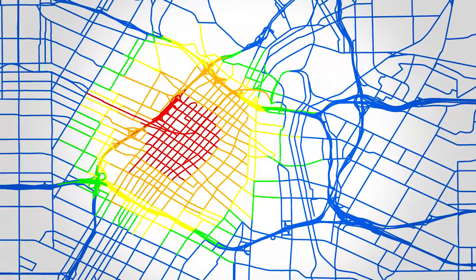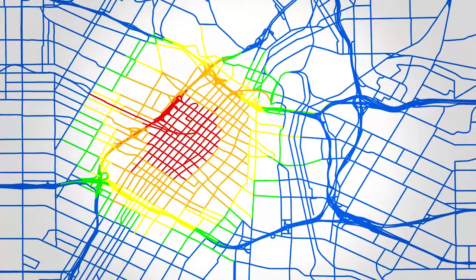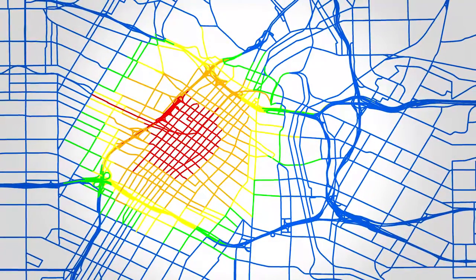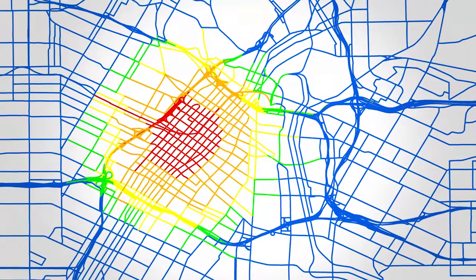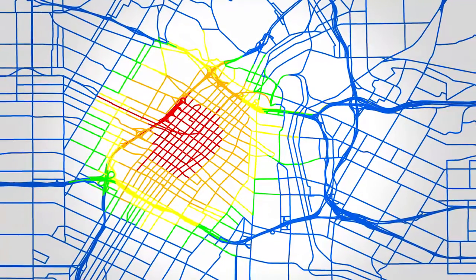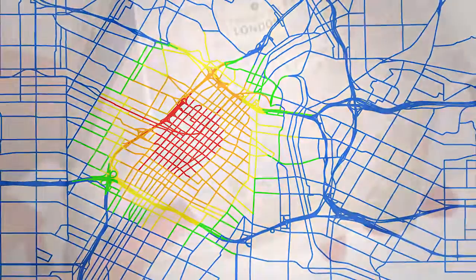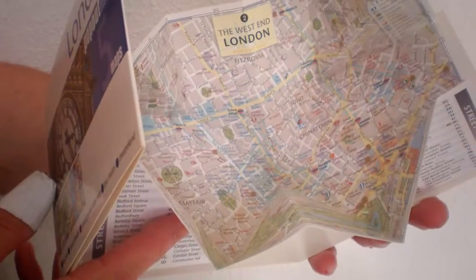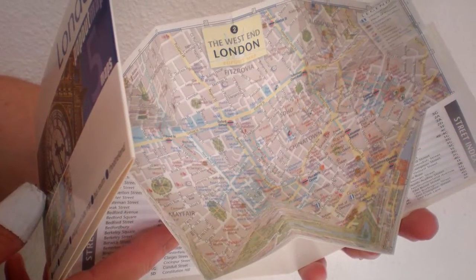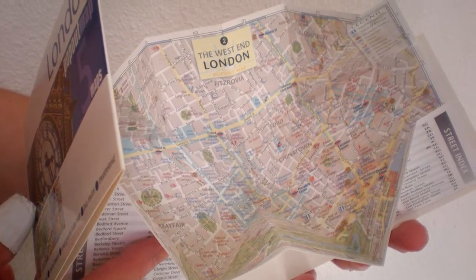But how well do you understand maps — not just as visual objects, but as scientific data, as the creations of standards, objects of design, and historical records?